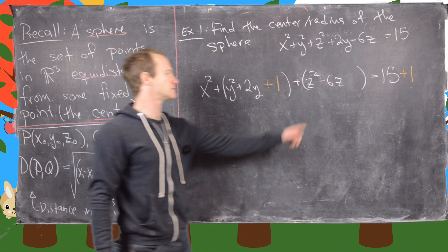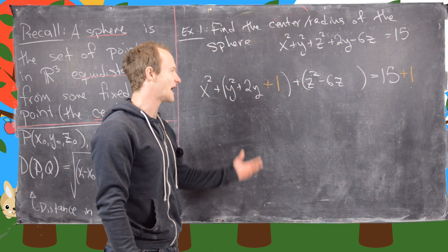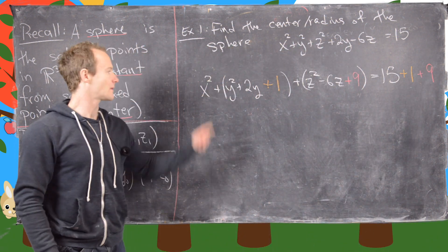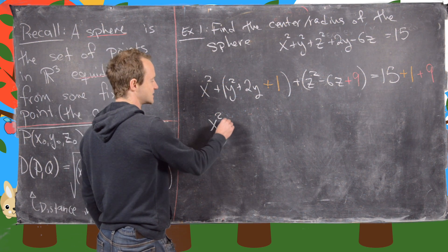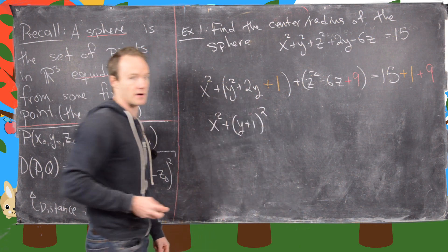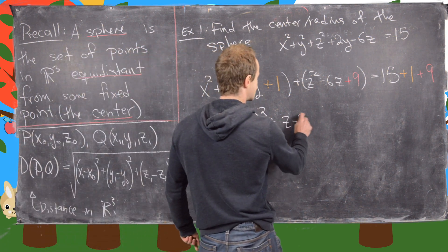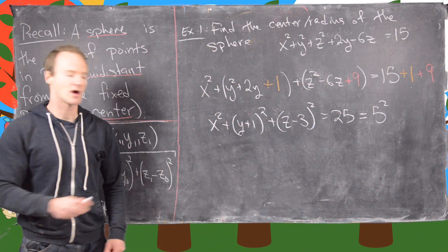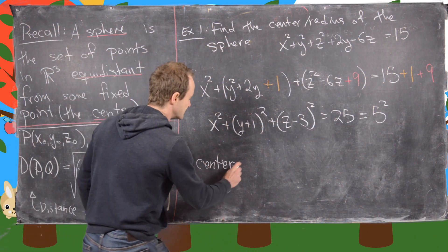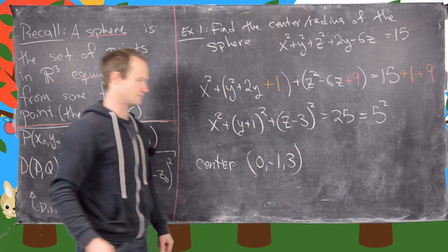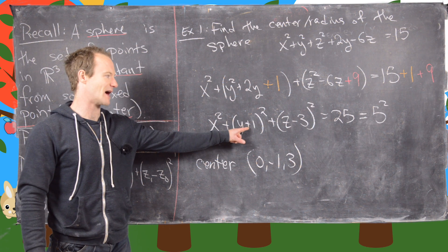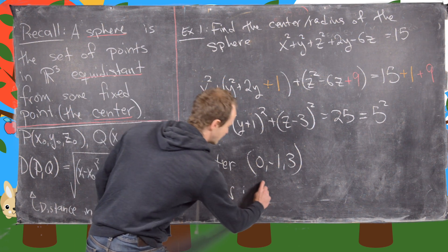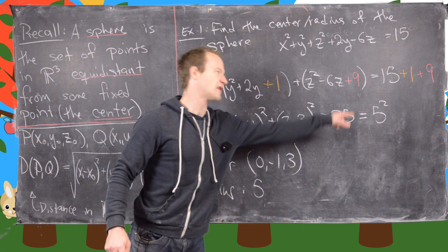For the z part, we take half of 6, which is 3 (noting the sign gives −3), square it to get 9. So we add 9 inside and add 9 to the right side as well. This allows us to write x² + (y + 1)² + (z − 3)² = 25. Since 25 = 5², our center is (0, −1, 3) — remembering to switch signs from the equation — and our radius is 5.